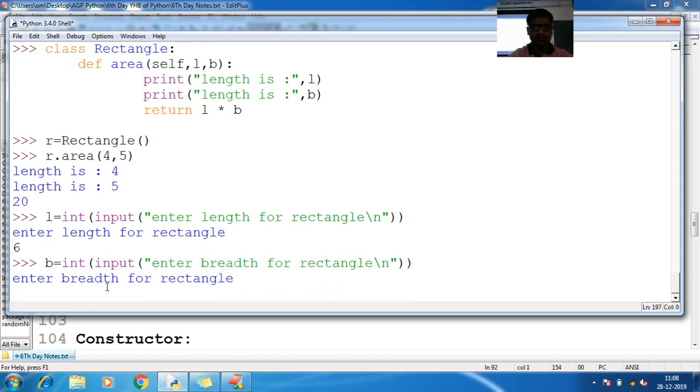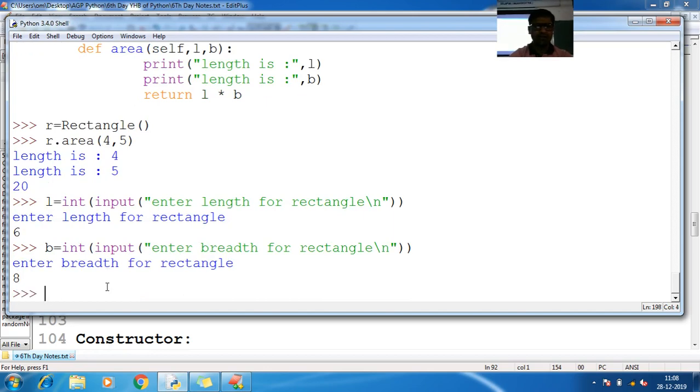So enter the length, enter the breadth. Now I can pass r in r of area, now here let me pass here l comma b. And let me print area of Rectangle is, area of Rectangle is.